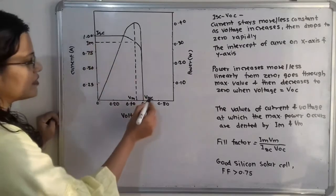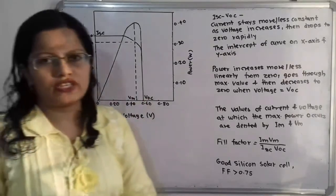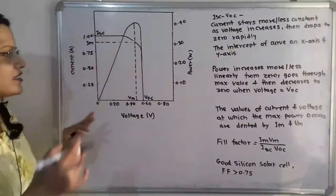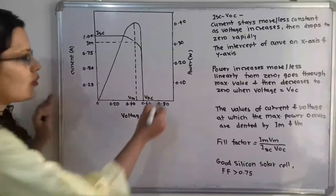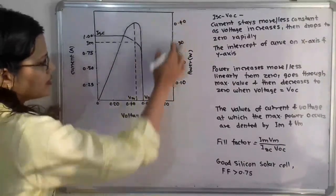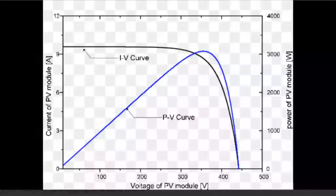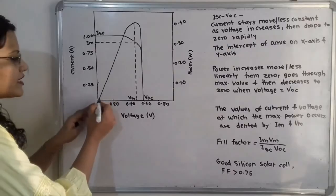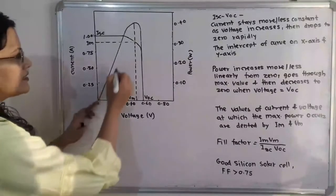Now we will move for the next, that is the power. So if we observe the power, we have to plot here, that is on the other side of the current. So this is power in watt. So how this power is getting changed? So power increases more or less linearly from zero.